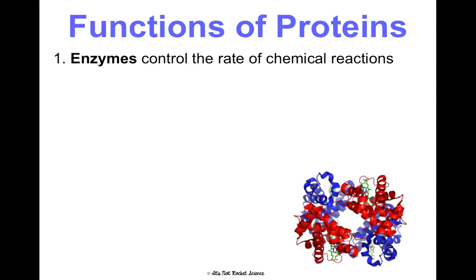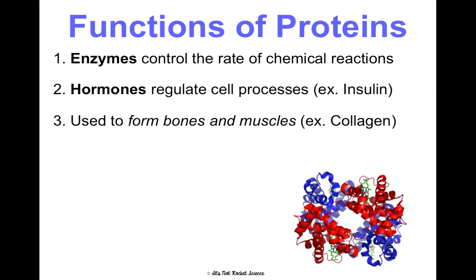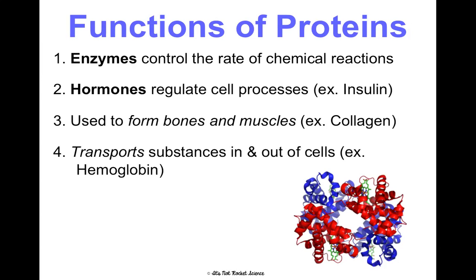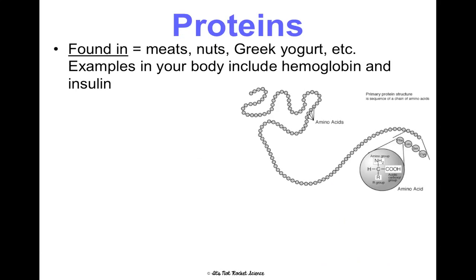First, proteins can be enzymes — they control the rates of chemical reactions, which we'll talk about more in a later unit. They can be hormones that regulate cell processes; insulin is a hormone that's a protein and it regulates your blood sugar. They are used to form bones and muscles — collagen is a protein that makes up bones. They're also used to transport things in and out of cells; hemoglobin is a protein that moves oxygen in your blood. They can be antibodies that help fight off diseases, and they can also be a source of energy, like casein in milk. You can find proteins in meats, nuts, Greek yogurt, and all sorts of things.